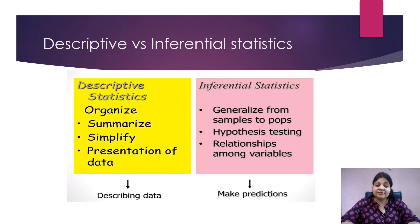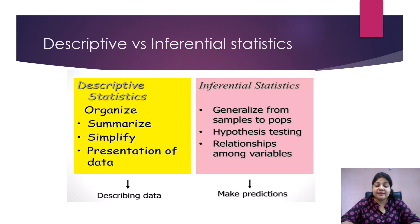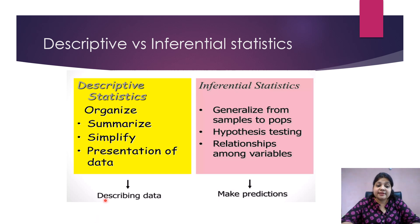Descriptive statistics helps us to organize, summarize, simplify, and present data in a presentable format. But if I want to generalize a particular conclusion or parameter for the entire population from a small subsample of data, I will use inferential statistics. It is used in hypothesis testing and to establish relationships among variables. So descriptive statistics helps in describing the data, whereas inferential statistics helps in making predictions — and prediction is a core concept of data science.